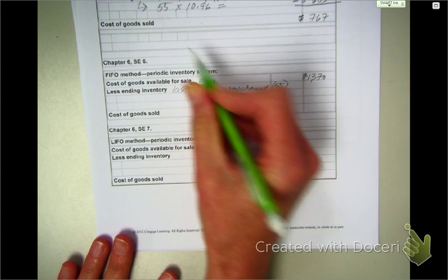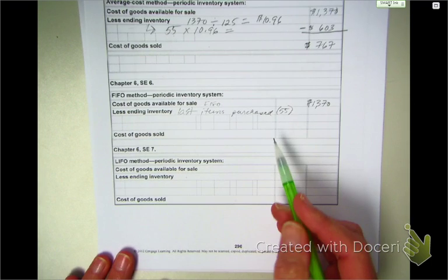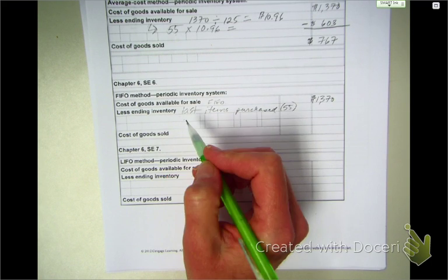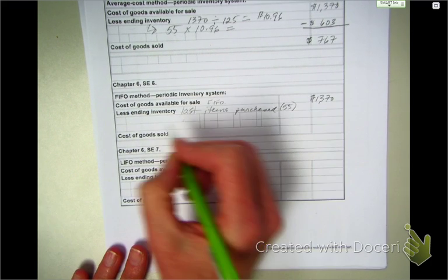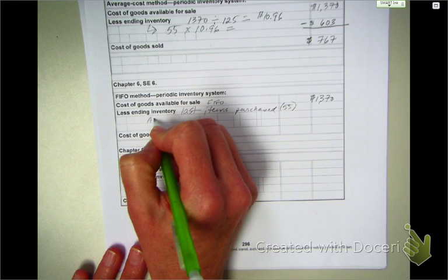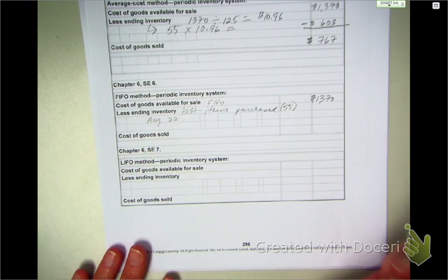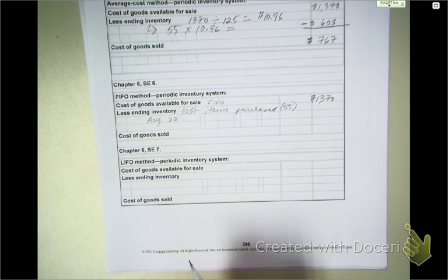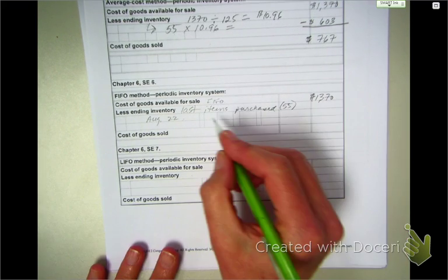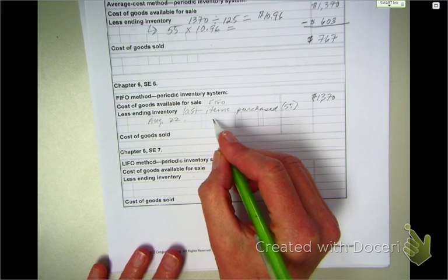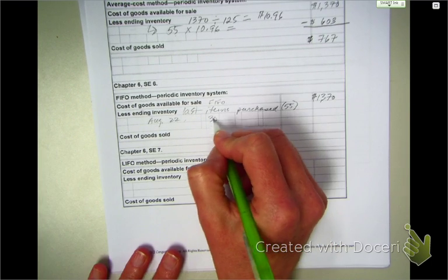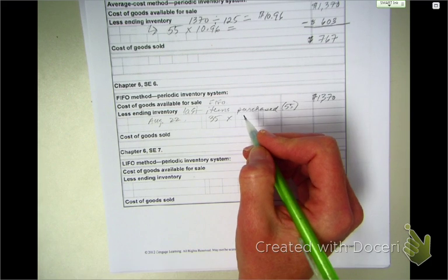Same 55 units. Just going to pick different ones. So, I'm going to go from my last items purchased on the 22nd. Because that's what they tell us in the problem. They say that our ending inventory is 55 units.